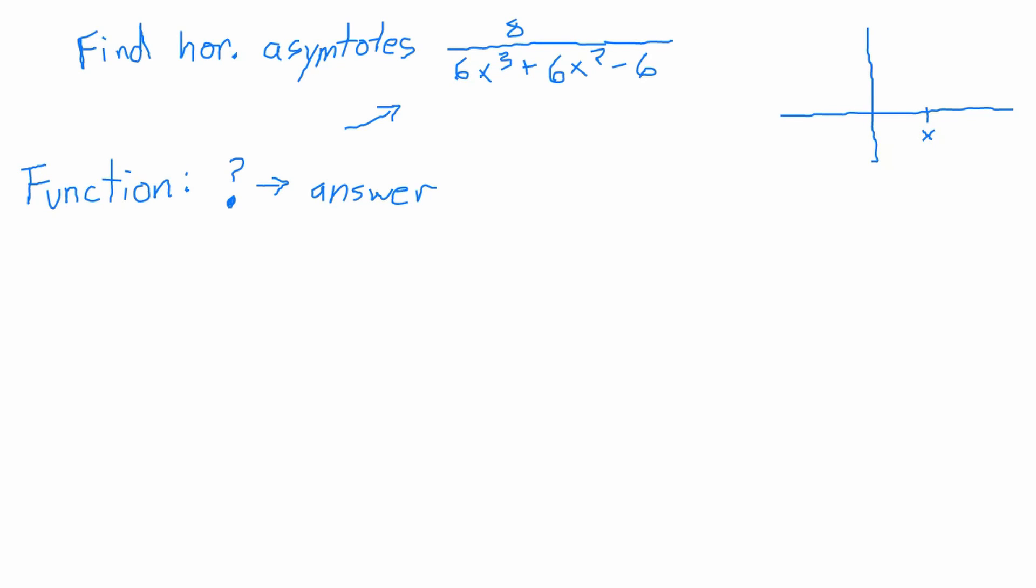Okay, so we're trying to find the horizontal asymptotes of this function. We know that function takes questions to an answer. What up here is eye-catching? I'm not necessarily looking for correct things, I'm just looking for interesting things.